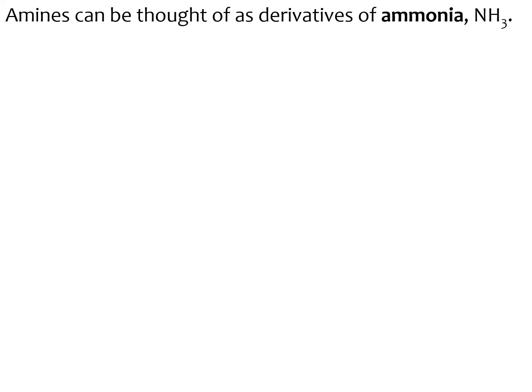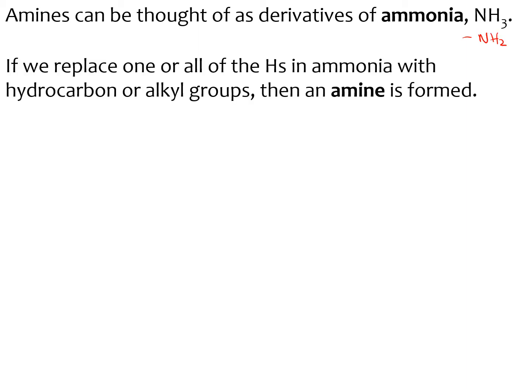Amines can be thought of as derivatives of ammonia, NH3. Amines have the functional group, normally, of NH2. If we replace one or all of the Hs in ammonia with hydrocarbon or alkyl groups, then an amine is formed. So if we were to put an R just in front of the NH2, that would form an amine.